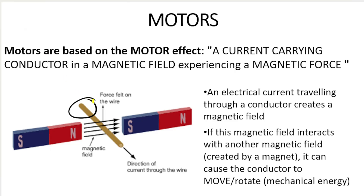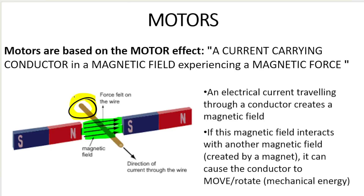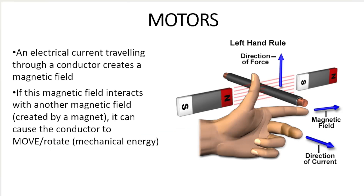That magnetic field from the wire interacts with the other magnetic field — the green one from the magnets. The interaction between these two magnetic fields causes a force to be felt on the wire. This is the motor effect essentially — it causes that wire to move or rotate, and that's where we get the word mechanical energy from.